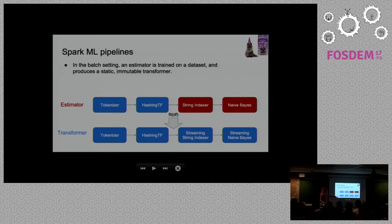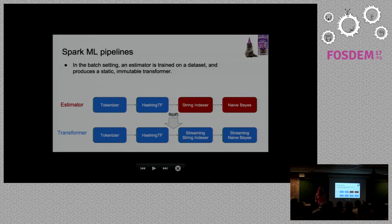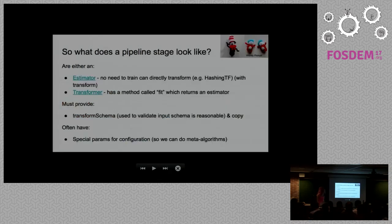The stages in these pipelines are either estimators or transformers. Transformers are the little blue boxes, and those are just things which don't need to be trained on data. So they're really simple to implement. We can just write a normal Spark job and add a little bit of sugar and make a transformer. But if you want to build something fancy, like a machine learning algorithm or something which needs to be trained on data, you'll have to build an estimator. And we'll look at how to do that really quickly.